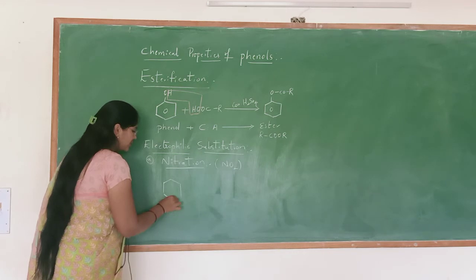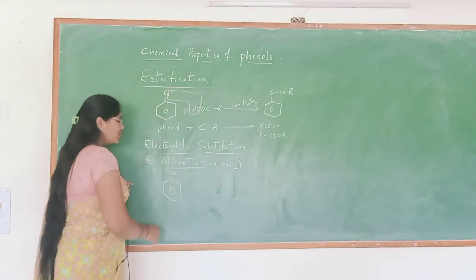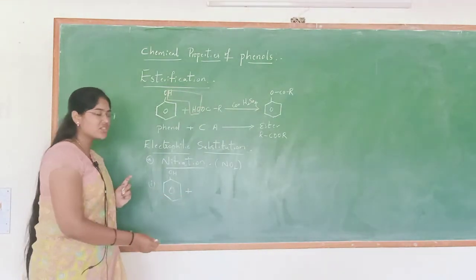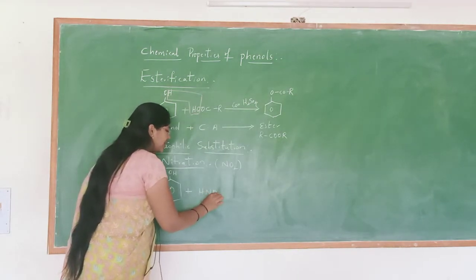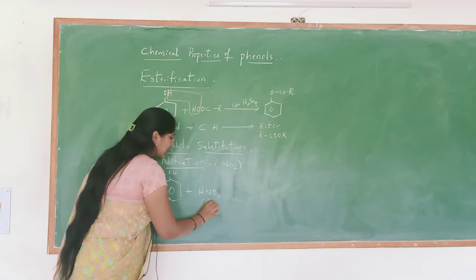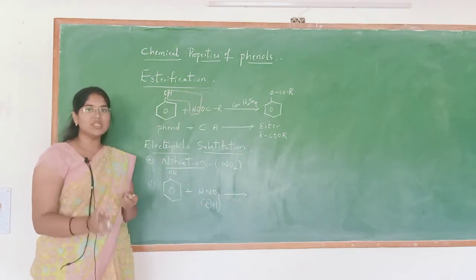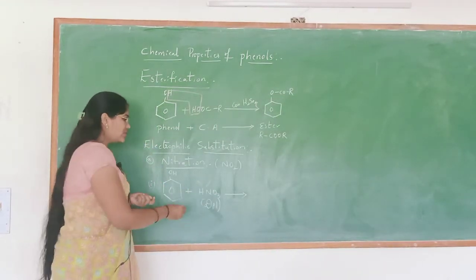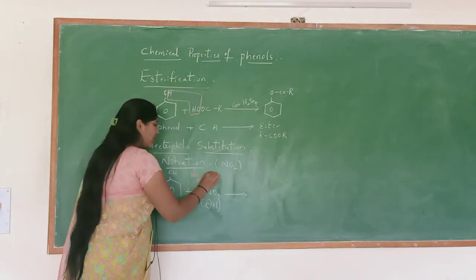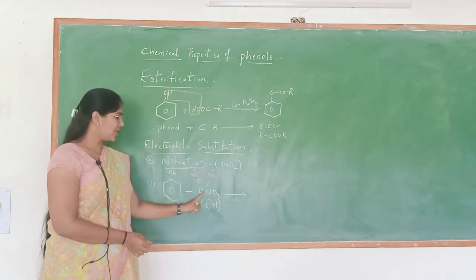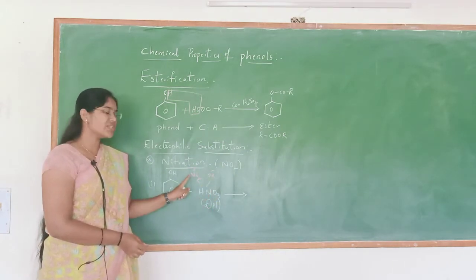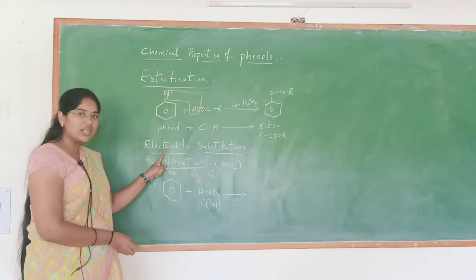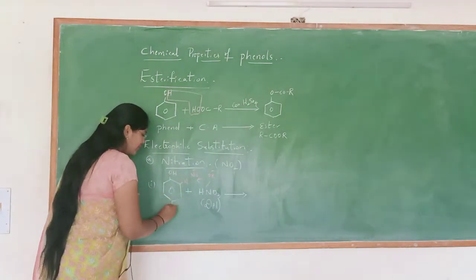So here I am taking phenol. Two types of nitration will take place. Suppose nitration is taking place in the presence of dilute HNO3. So I am taking dilute nitric acid. Then here we will get a mixture of two compounds. HNO3 contains two ions: NO2+ and OH−. NO2+ bears positive charge so we can say it is an electrophile, and it attacks at ortho and para positions.